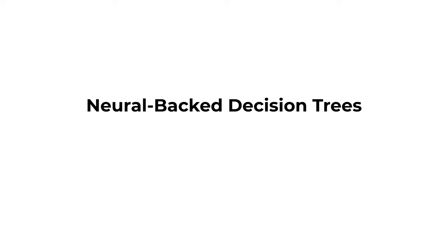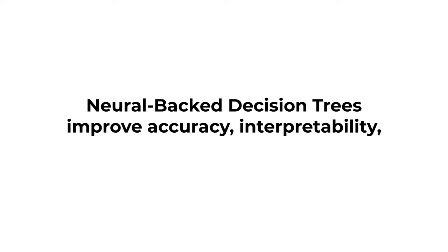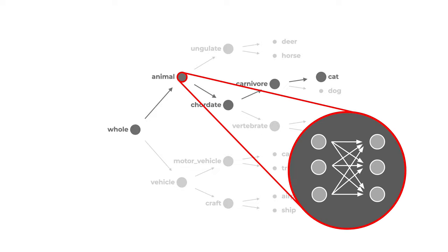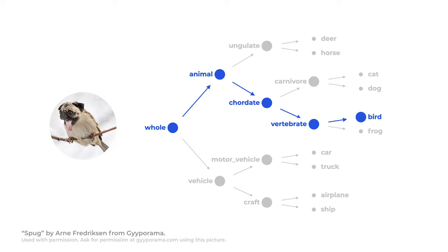To solve this problem, we build neural-backed decision trees, which improve accuracy, interpretability, and generalization. We preserve high-level interpretability by imposing a structure of decisions. We then use neural networks for low-level decisions. For our furry friend, we see that MBDT decides on bird. Consider how certain each decision is — over 95% certainty in most cases, except when the model decides between dog and bird. Now we understand the model's decision process.